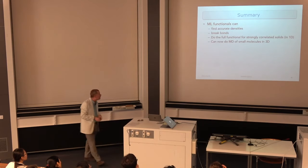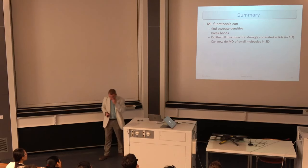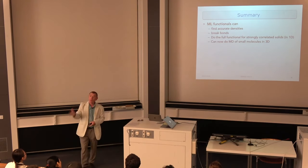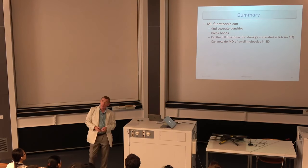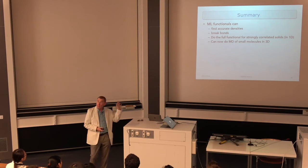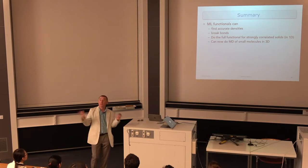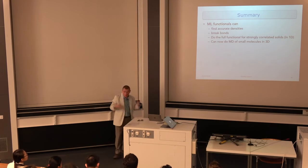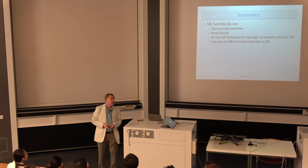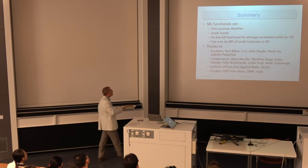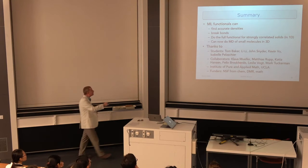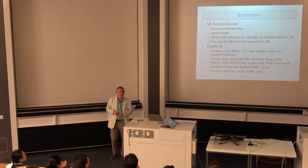In summary: we can now do small molecules in three dimensions, and the full functional — including exchange-correlation — in one dimension for strongly correlated systems. DFT doesn't fail for strongly correlated systems — approximate functionals do. We've shown with DMRG that the exact functional works fine for strongly correlated systems, and in principle machine learning can get past that restriction. Several projects are ongoing along those lines. Thanks to the students, collaborators, and the Institute for Pure and Applied Mathematics at UCLA where all this started. Thank you for your attention.